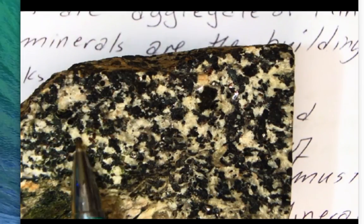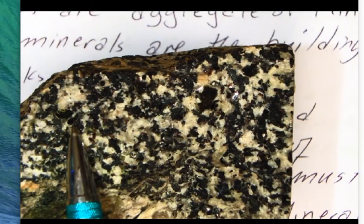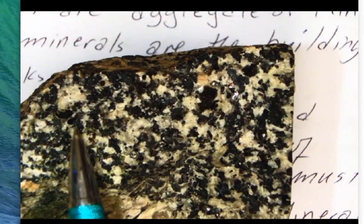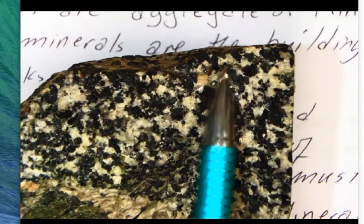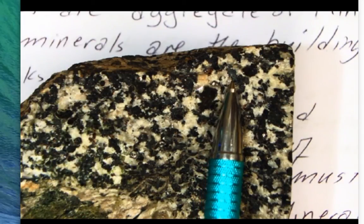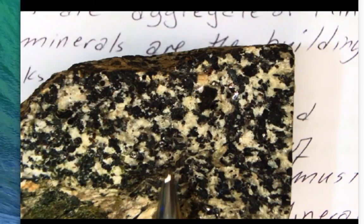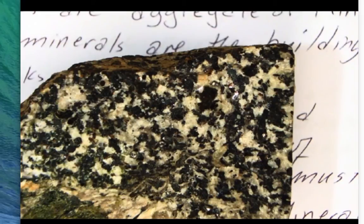You can see the hornblende is not quite as shiny or vitreous or as dark as biotite. There's a biotite there, but right next to it, you can see the hornblende mineral. So this rock is composed of several minerals and aggregated minerals, and we'll first look at minerals in larger samples and do some background work on them.